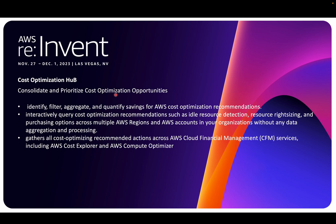AWS already has tools like Compute Optimizer and right-sizing recommendations, but Cost Optimization Hub is one consolidated place where you'll see all sorts of recommendations. I haven't used this service before — this is the first time I'll be enabling it on my account. I can't show you live data because it takes around 24 hours to generate, but I'll show you the concept and what the data looks like based on AWS documentation.